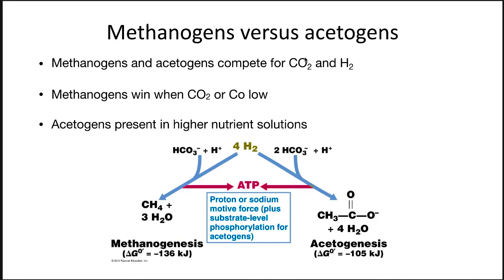Before we move on and talk about microbial metabolic partnerships, let's compare methanogens versus acetogens — they're both competing for the same thing. Methanogens and acetogens compete for carbon dioxide and H2. Methanogens win when carbon dioxide is low or when cobalt is low; cobalt is required and is part of B12, which is a cofactor in acetogenesis. Acetogens are present in higher-nutrient solutions. The reason methanogens normally win when hydrogen gas or CO2 is low is because their process is more energetically favorable versus acetogenesis.